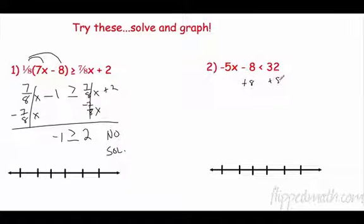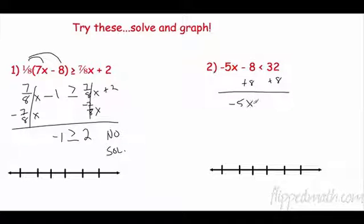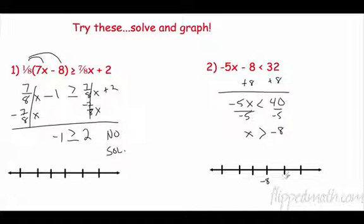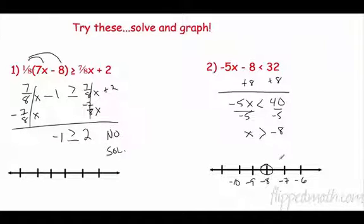Add 8 to both sides. That gives us negative 5x is less than 40. Now divide by negative 5 — and since we're dividing by a negative, we have to switch the sign, so it goes to greater than. So x is greater than negative 8. Graphing it: open circle at negative 8, with all numbers greater than that going to the right.